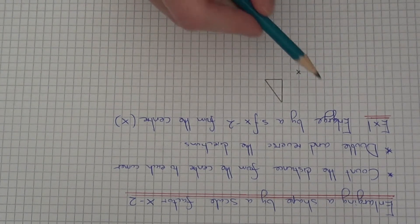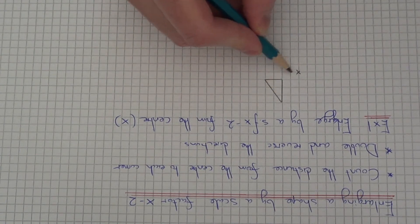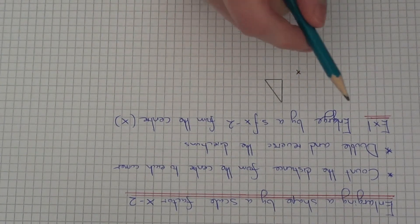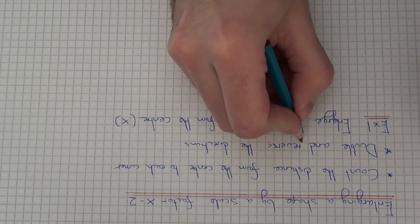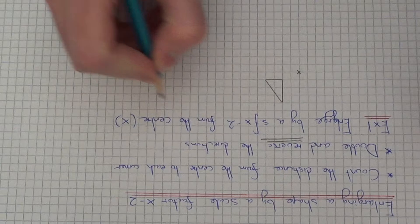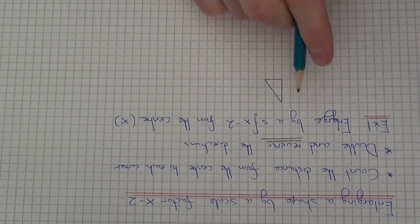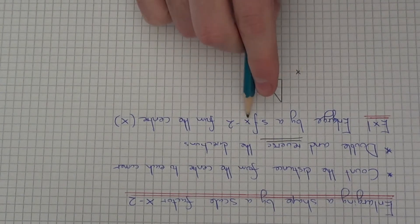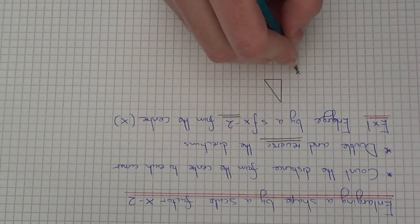So the way to do it is to count the distance from the centre of enlargement to each of your corners and then you need to double and the main thing is to reverse the directions. So let's have a look at this example here, we need to enlarge the triangle by a scale factor times minus 2 from the centre of enlargement.